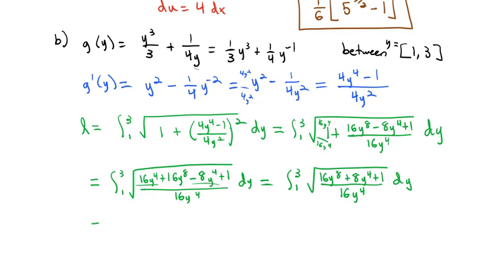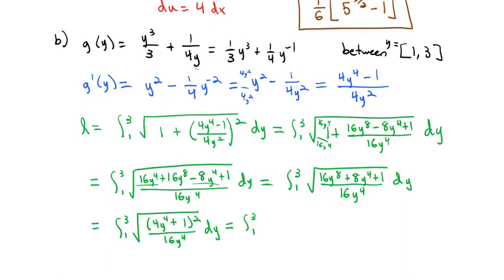Combining like terms on those y to the fourths, we get the integral from 1 to 3 of the square root of (16y to the eighth plus 8y to the fourth plus 1) over 16y to the fourth dy. The numerator can factor — it's actually a perfect square. The square root of 16y to the eighth is 4y to the fourth plus 1, all squared, over 16y to the fourth. Taking the square root of numerator and denominator: 4y to the fourth plus 1 over 4y squared.